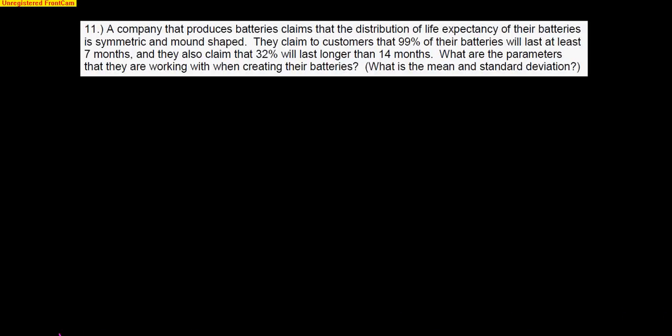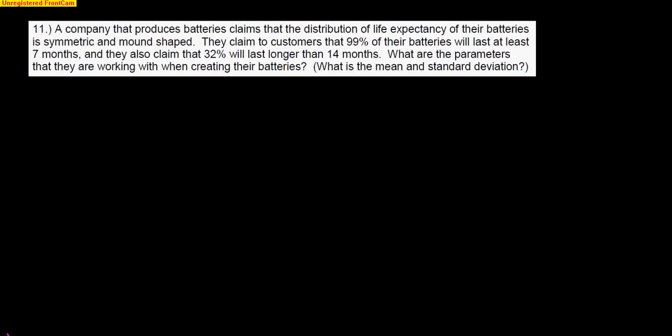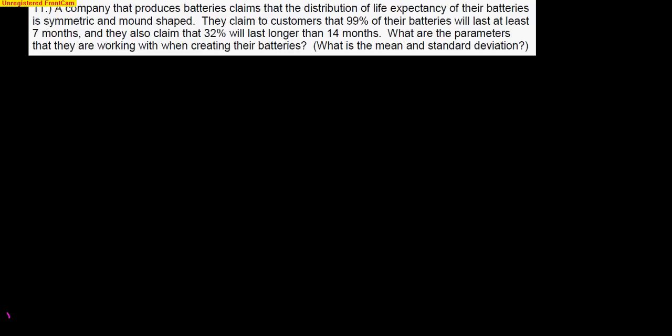Alright, and the last problem I want to quickly go over is one of our famous Level 7 problems. I think this is really important for us to cover, and I really want you to know how to do these problems because there will be one on the test. A company that produces batteries claims that the distribution of life expectancies of their batteries is symmetric and mound-shaped. That's awesome. That means it's normal. They claim to customers that 99% of their batteries will last at least 7 months. Now, let's make sure we truly understand what that means. 99% of batteries will last at least. At least means longer, or larger, or more than. Please, a lot of kids miss at least, and they think less than. So if I'm thinking about 7 months, this means that 99% of batteries will last longer or larger than 7 months. They also told us that 32% will last longer than 14 months. So here's 14 months, and they tell us that 32% of batteries will last longer than 14 months.